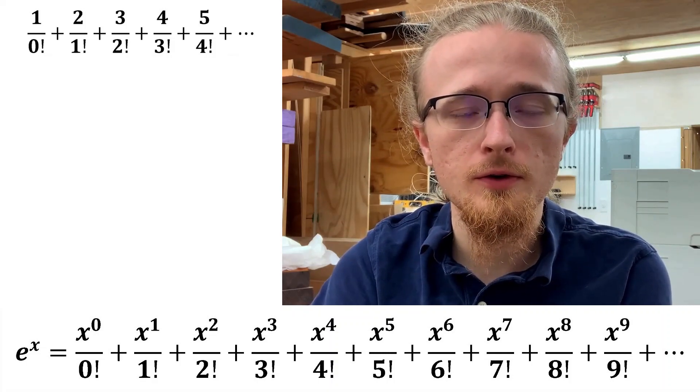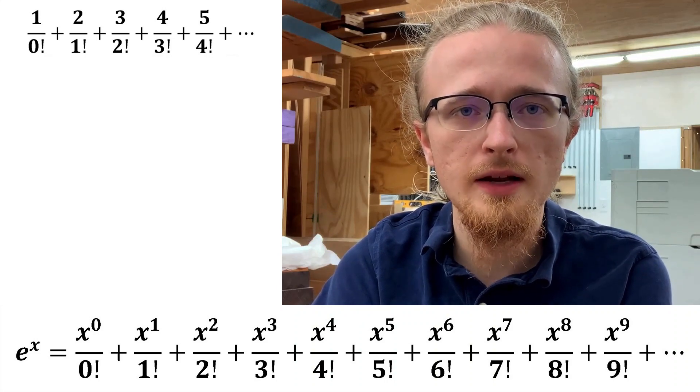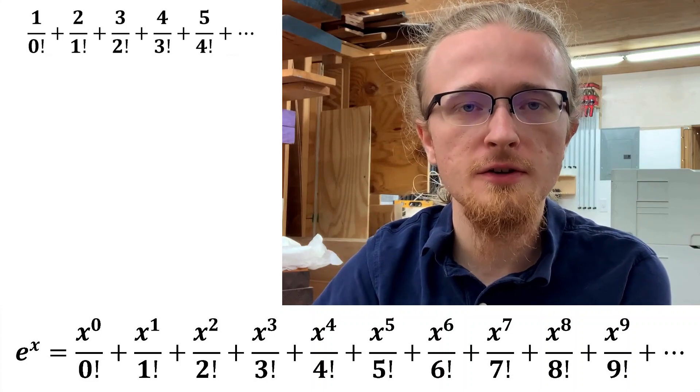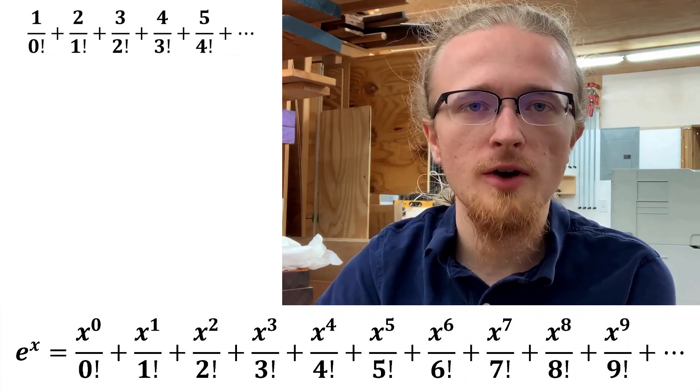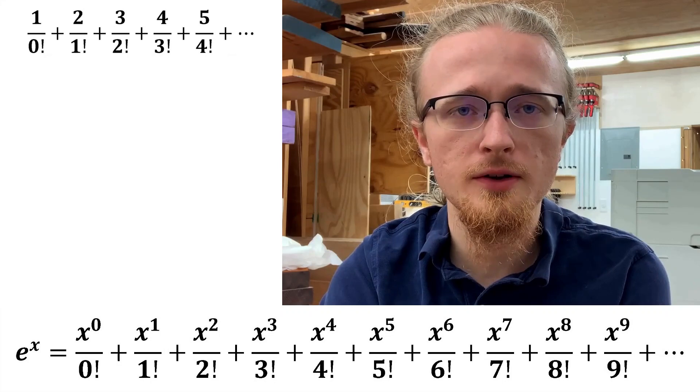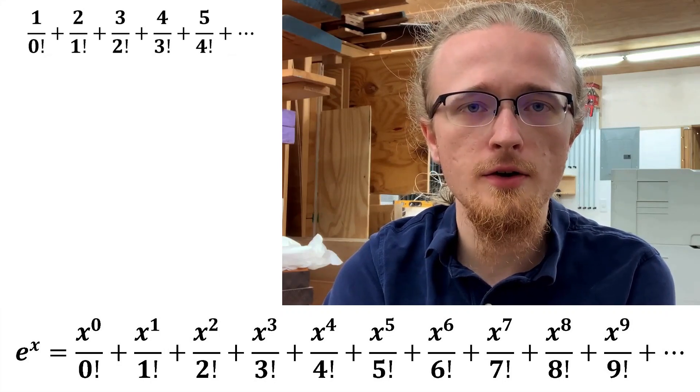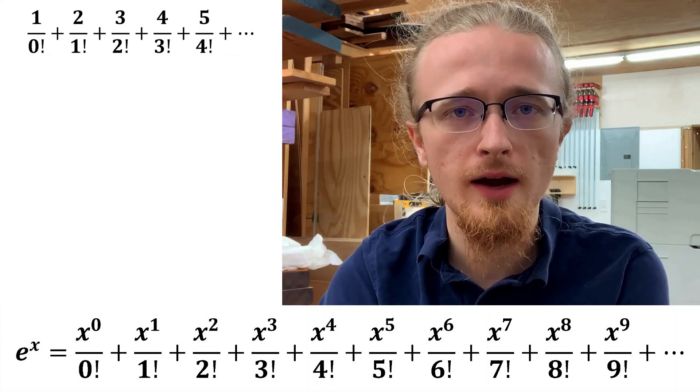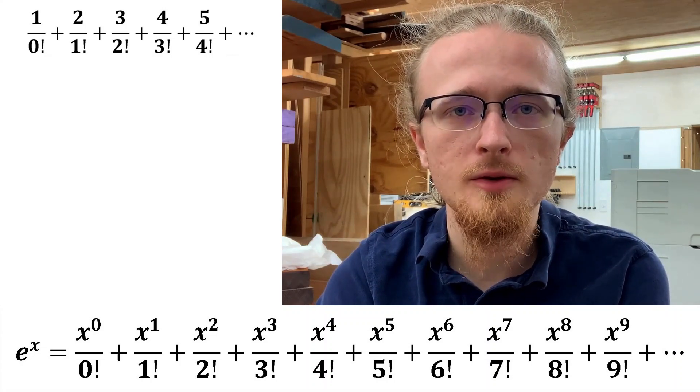It's tempting, therefore, to look for a value for x that you could plug into the Taylor series expansion of the natural exponential to leave behind the series we have. But because the numerator of the natural exponential Taylor series is x to the n, there is no value for x that you could possibly select that would do that. As a result, we're going to have to be a bit cleverer.